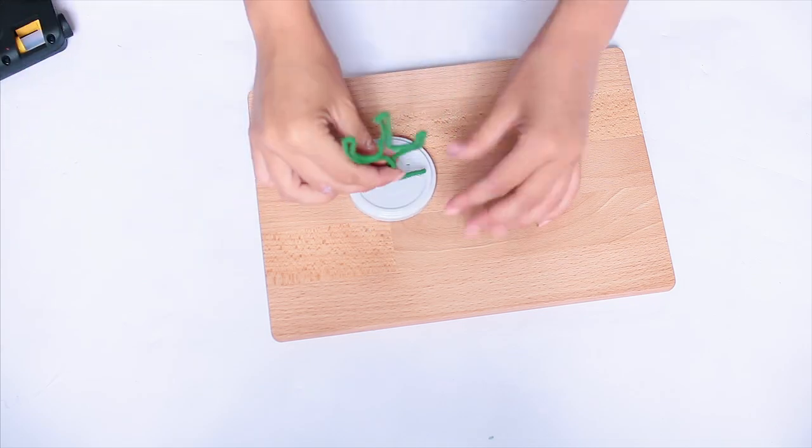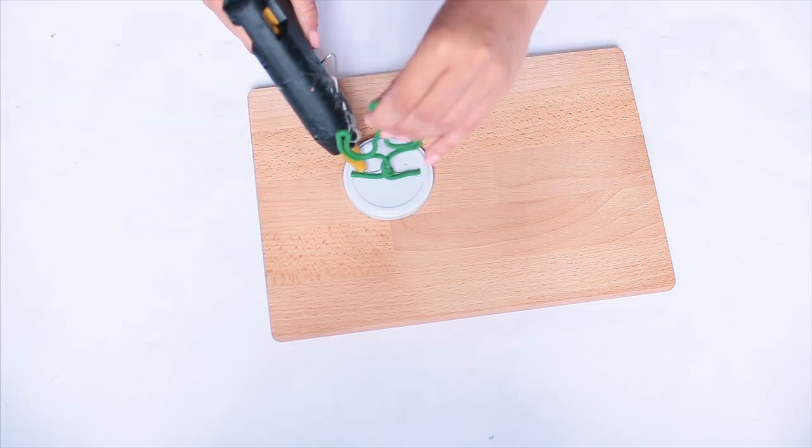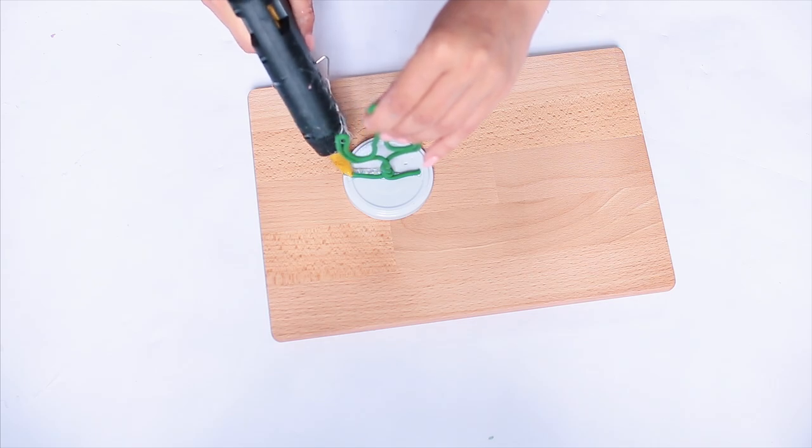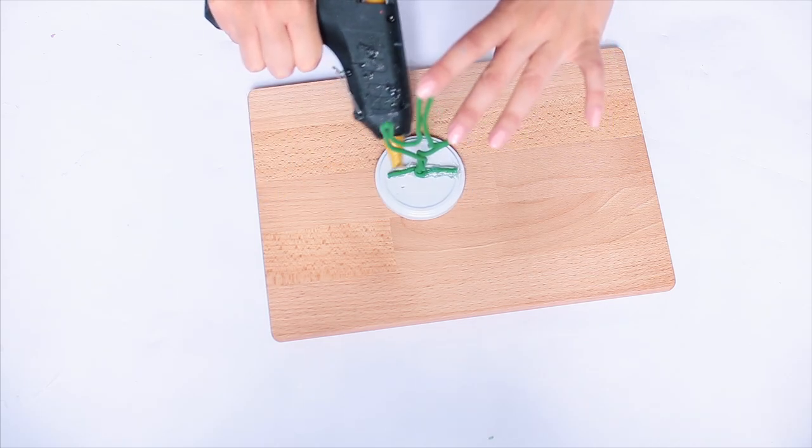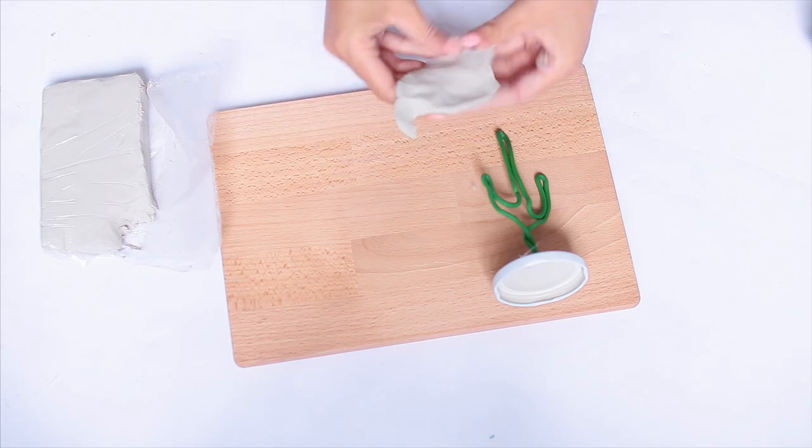To secure it you'll need to use some hot glue, so place it down on the lid and glue it into place. Then you'll also want to use a little bit of hot glue down the sides as well just to make sure it's got a really firm hold.